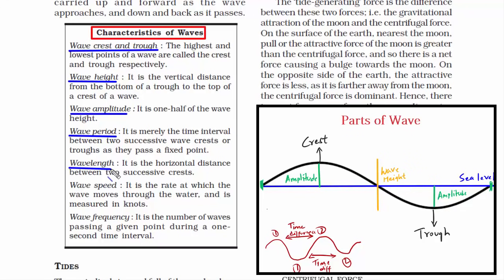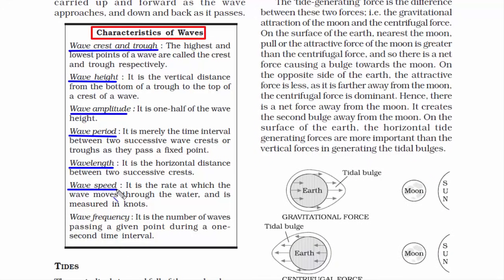Don't confuse wavelength with wave period. Wave period is the time difference, but wavelength is the horizontal distance between crest to crest as well as trough to trough. Wave speed is the rate at which the wave moves through the water, measured in knots.